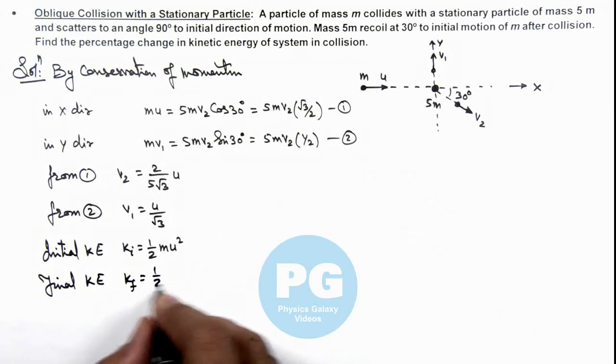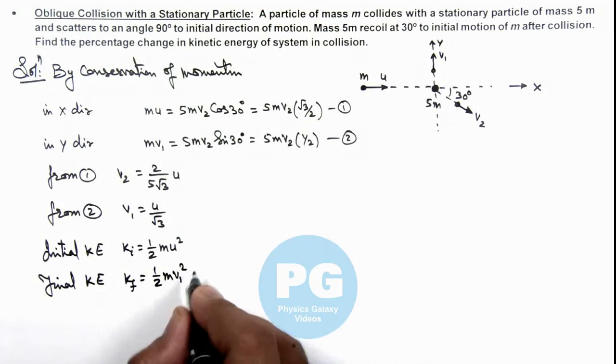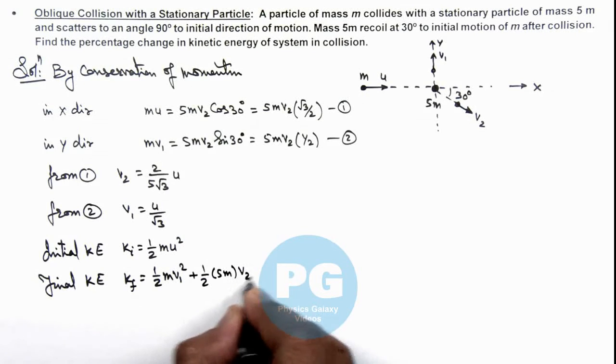And if we calculate the final kinetic energy of system KE_f, then it'll be (1/2)m·v1² plus (1/2)·5m·v2².